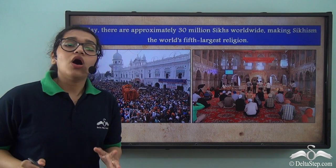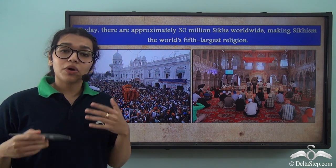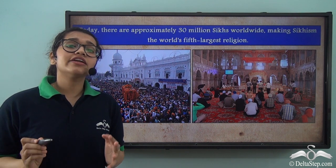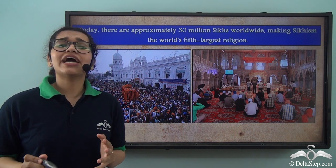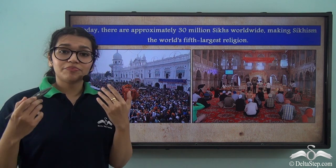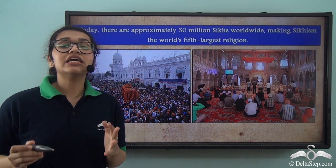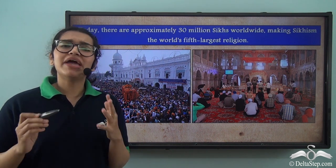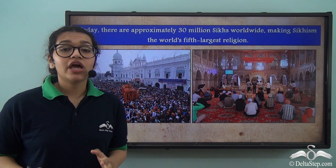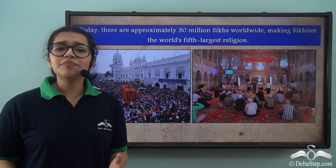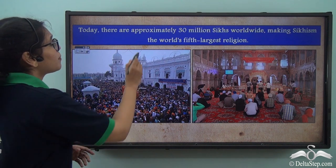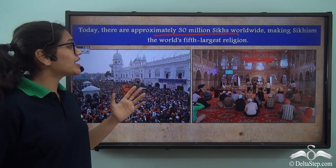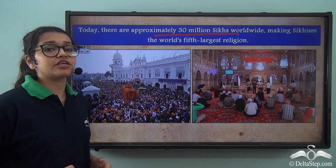Guru Nanak Dev founded the religion called Sikhism. He was born in 1469 and died in Kartarpur, present-day Pakistan, in 1539. He inspired many people with his teachings, and even today many people follow his religion. In fact, approximately 30 million Sikhs are there worldwide, making Sikhism the fifth largest religion today.